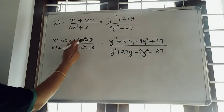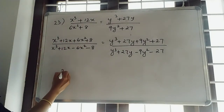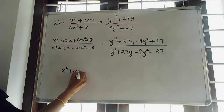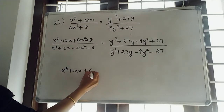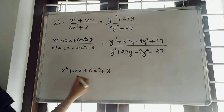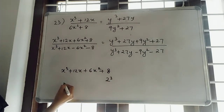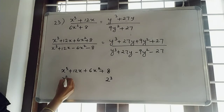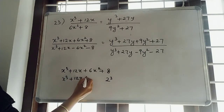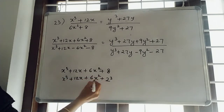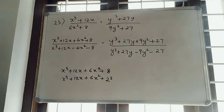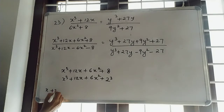Now, the numerator is x³ + 12x + 6x² + 8. We can write 8 as 2³. So, x³ + 12x + 6x² — all are plus. Can we write this in the form of (x + 2)³? Just look at (x + 2)³.